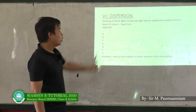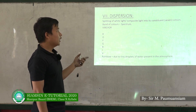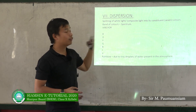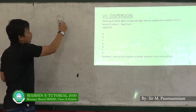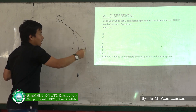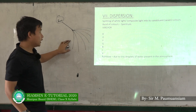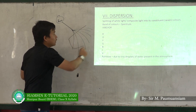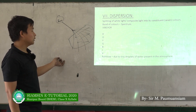Dispersion of light: white light is a composite light made up of constituent colors. When white light is split through a prism, it disperses into 7 colors, forming a spectrum. This splitting of white light into its 7 constituent colors is known as dispersion.